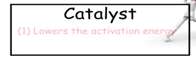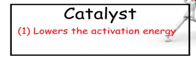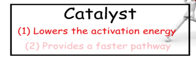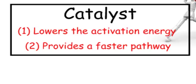Another factor is a catalyst. When we add a catalyst, one of two things happens: either it lowers the activation energy, which basically stabilizes a transition state to lower the energy needed for the reaction, or it provides a faster pathway by forming a new reaction intermediate. It's kind of like driving home — you can either drive faster, or you find a quicker route home. That's what a catalyst does.